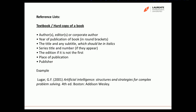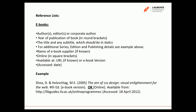The second example is from an e-book, which has a similar structure — the order of details and the book title in italics, and the edition. However, you need to signify whether it is an e-book version. If you've downloaded it from an online retailer, you put 'e-book version' in close brackets. If you've accessed it online from a library, you put the URL and the date you accessed it. So the example shows either 'e-book version' or 'online, available from' followed by the URL and 'accessed 18th of April 2012'.